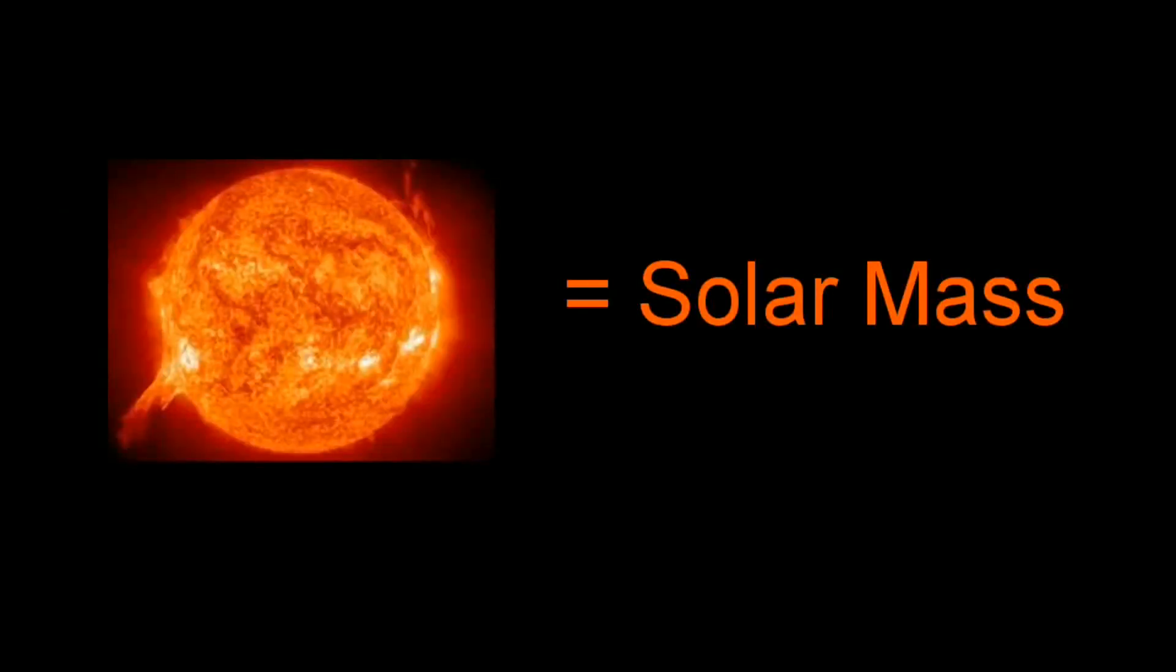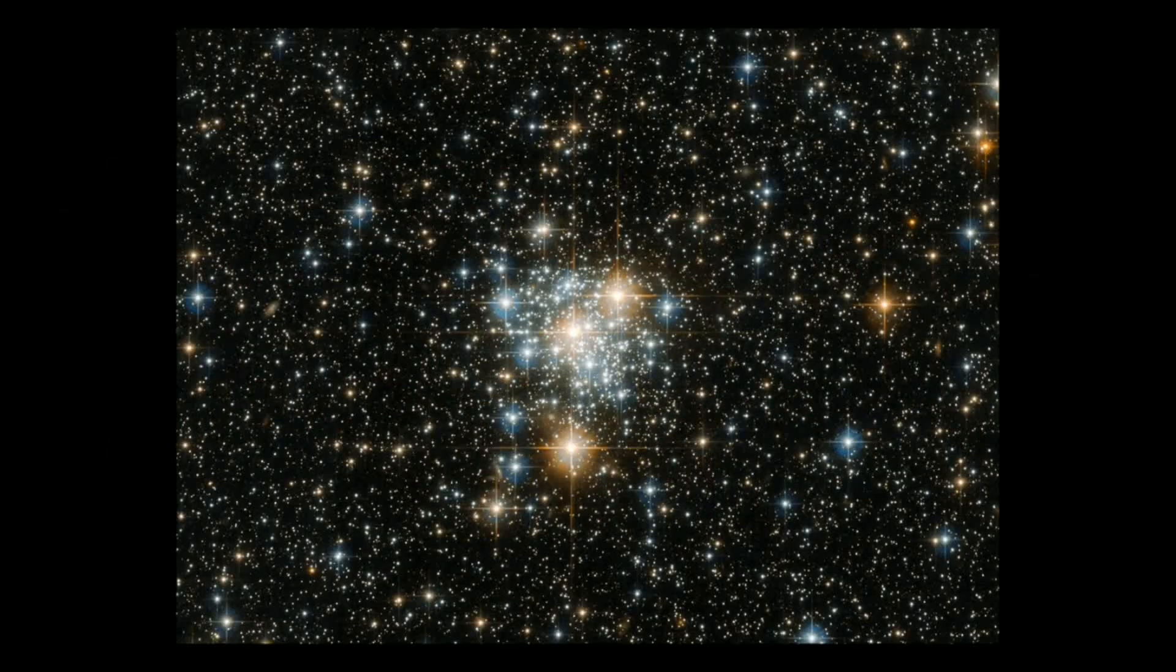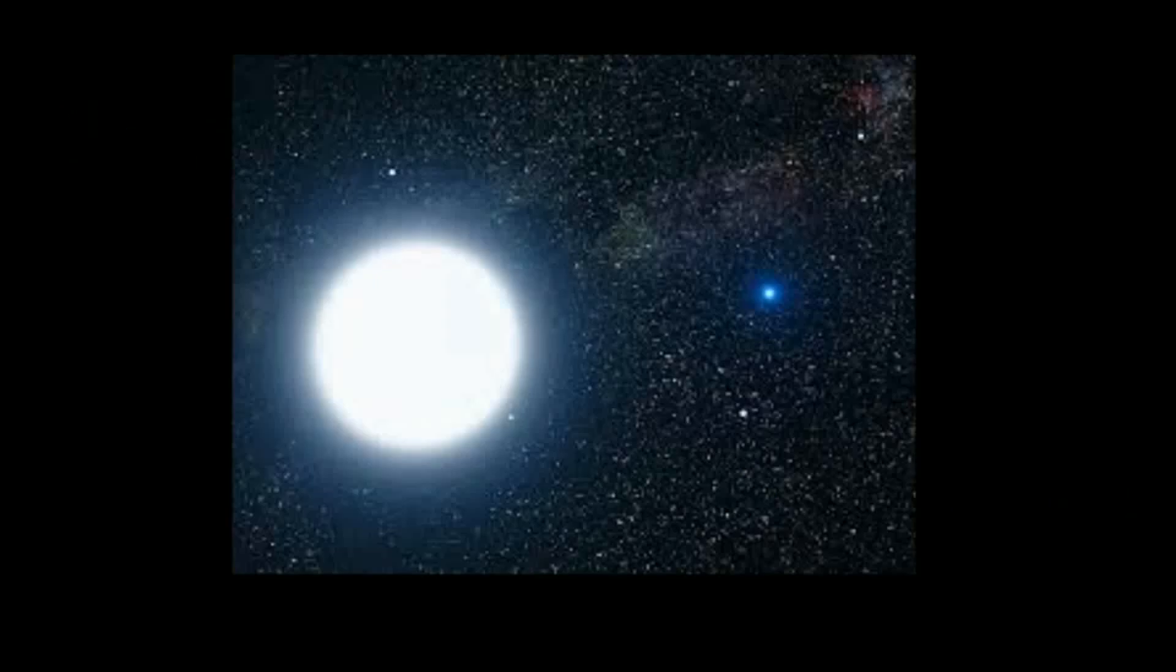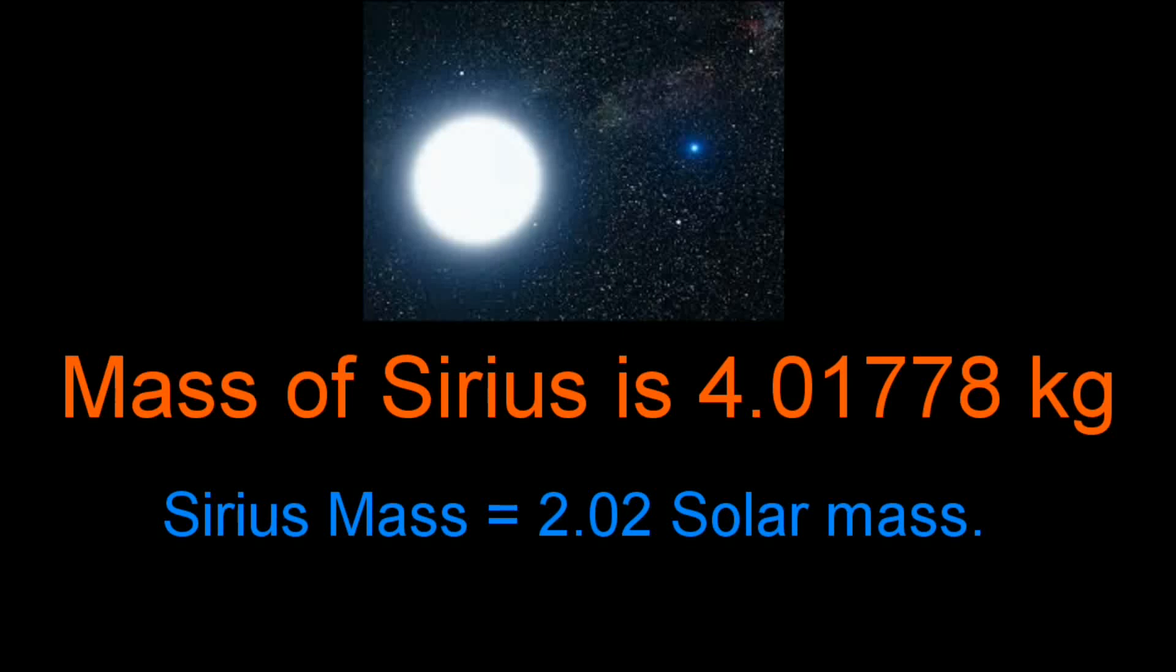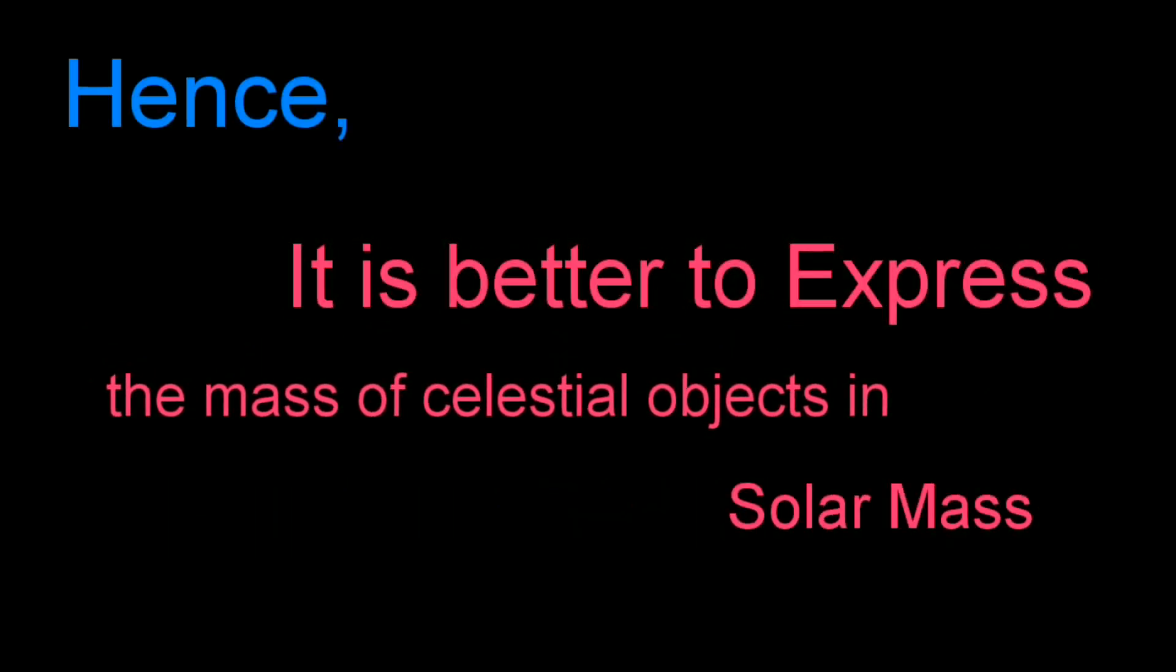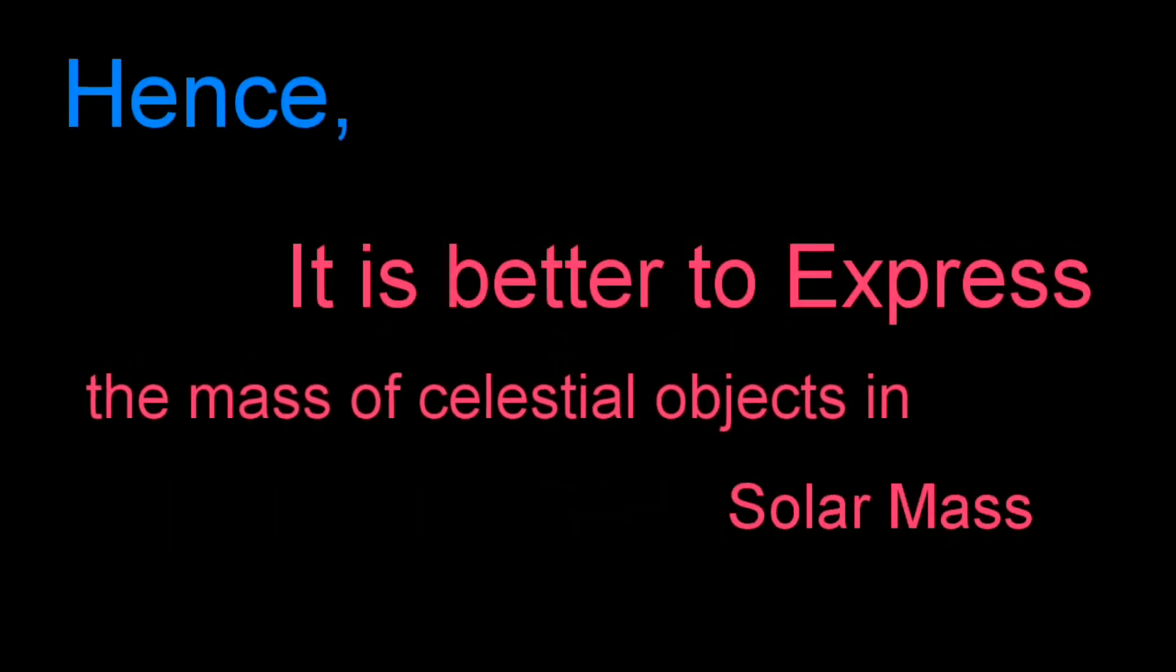We use solar mass to express the mass of celestial objects because if the mass of celestial objects are expressed in kilograms, it becomes difficult to remember. For example, the mass of the brightest star Sirius is 4.02 × 10^30 kg, and in solar mass it is 2.02 solar masses. Hence, it is better to express the mass of celestial objects in solar mass.